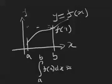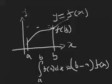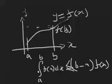The height of that rectangle is f of b. So this value — f of b times (b minus a) — is somewhat bigger than the actual area under the curve from a to b. In other words, f of b times (b minus a) is bigger than the real integral of f from a to b.